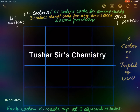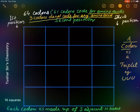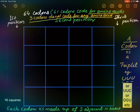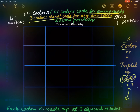Hello, welcome back to my channel. In this video we will write 64 codons in the table given on the screen. Out of 64 codons, 61 codons code for amino acids; three codons do not code for any amino acids. A codon is a triplet — each codon is made up of three adjacent nitrogen bases: this is the first position, this is the second position, this is the third position.